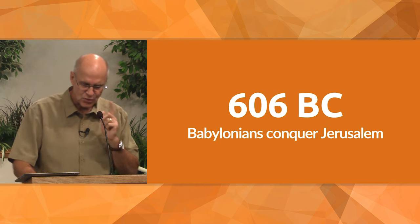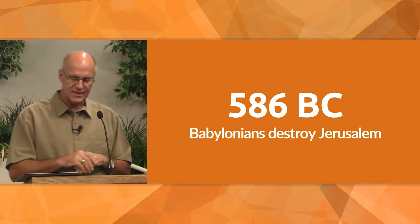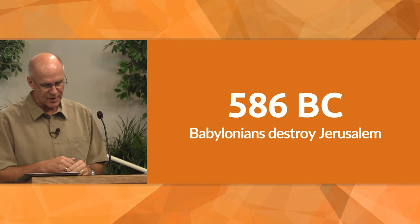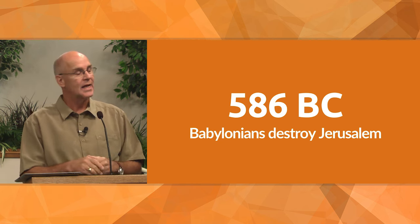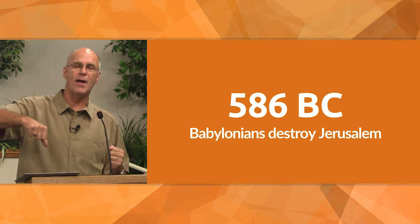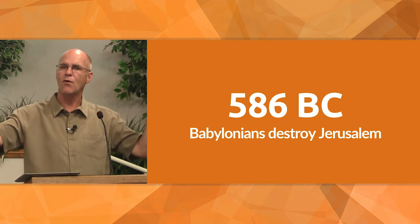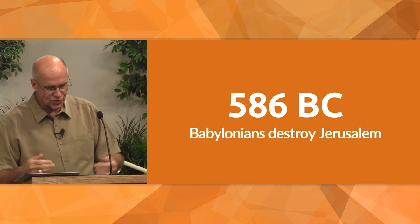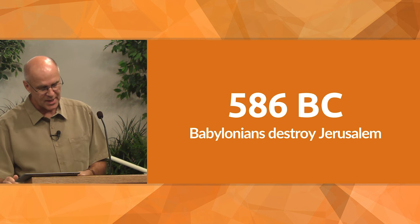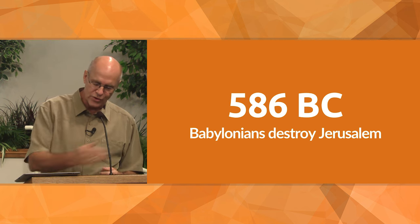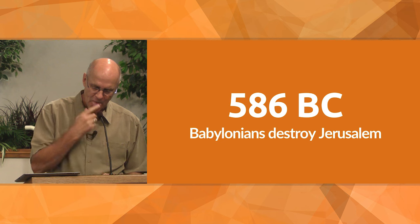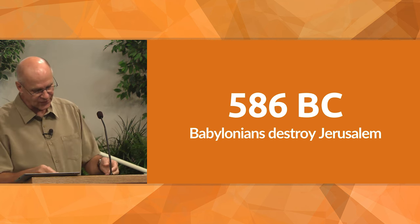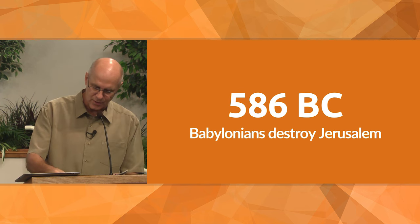So 20 years later, in 586 BC, the king who had been left in charge of the southern kingdom by the Babylonians — his name was Zedekiah — rebelled. He figured, we're going to throw off the yoke of Babylon. So what do the Babylonians do? They return to Jerusalem, destroy the temple this time, destroy the city, and carry off even more Jews into captivity. As I mentioned before, the Babylonian system was to carry off the leaders and retrain them in Babylonian culture.